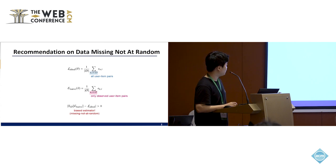On the first row, the ideal loss function would be the error aggregated on all user-item pairs. However, the recommendation dataset only contains observed user-item pairs, so the naive estimator would be the error aggregated on the observed user-item pairs.